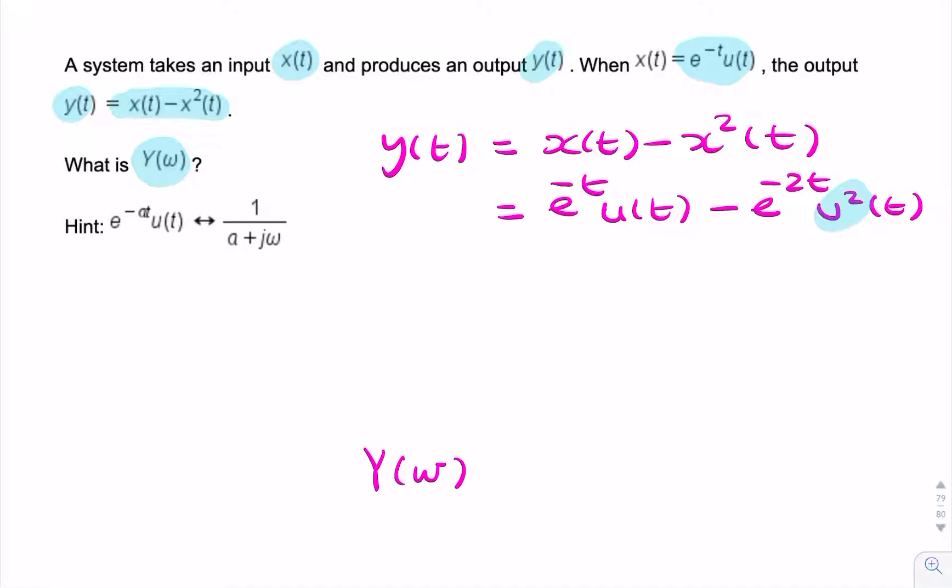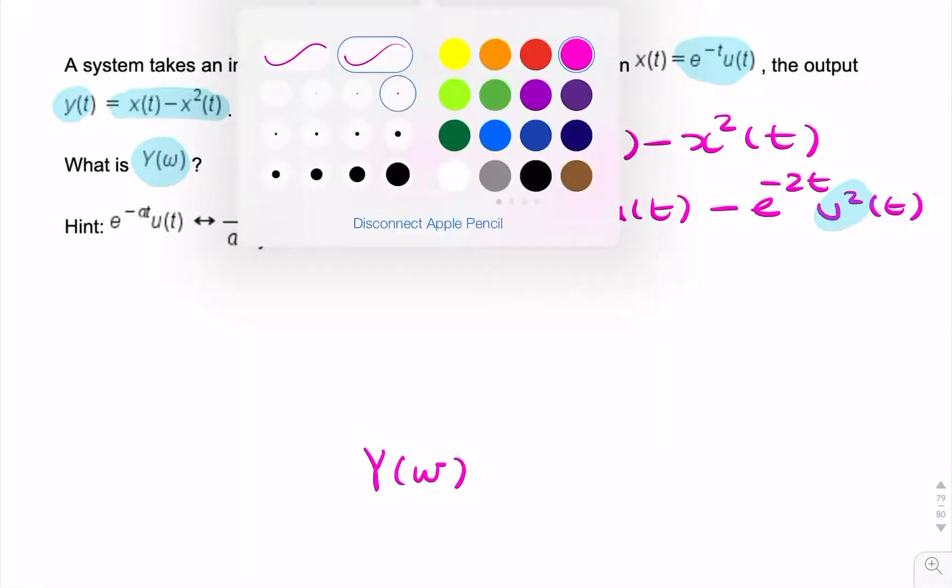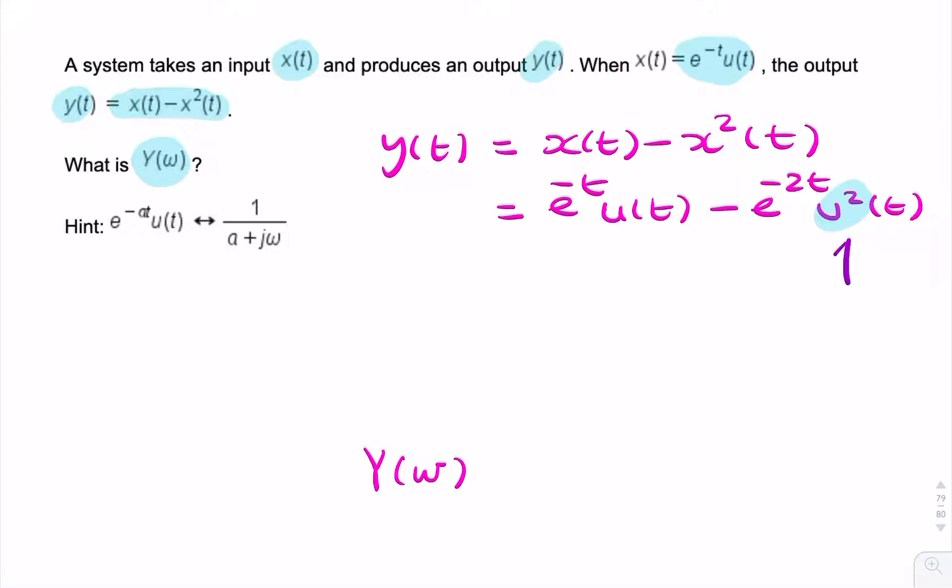Now, u squared is just u(t). It's just 1, isn't it? Remember, a unit step looks like that, with an amplitude of 1. If that were to be squared, it wouldn't change.